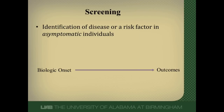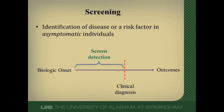Screening is the identification of a disease or risk factor in asymptomatic individuals. Down here at the bottom, I have a model of a disease. At some point there's biologic onset, and then it has its course to developing outcomes. Often what happens with a disease is that it takes some time from onset before we make a clinical diagnosis. It's during this asymptomatic phase before clinical diagnosis where we do screening detection of diseases or risk factors.